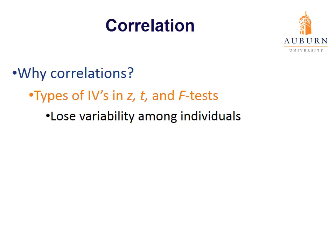Whenever we introduce a new test, we always ask the question: why are we introducing this new test when we have several others already? What does this new test give us that the others don't? We'll talk about what correlations give us that our other tests — the Z, T, and F tests — do not. Those tests use groups of individuals in their analyses. We use groups to minimize the fact that people differ from each other. However, those differences are very meaningful, and so we lose that important variability of individuals.